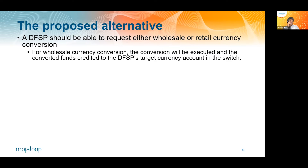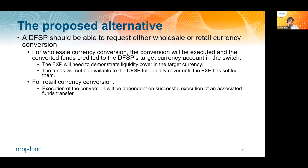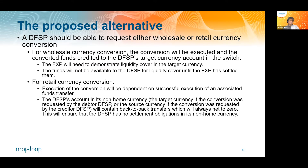We wanted a DFSP to be able to request either wholesale or retail currency conversion in the same way, so it shouldn't be necessary for the foreign exchange provider to know whether it's wholesale or retail conversion that's being required. For wholesale currency conversion, the conversion just gets executed and the converted funds are credited back to the DFSP's target currency account. For retail, i.e. per transfer, what we want is that the execution of the conversion will be dependent on a successful execution of an associated funds transfer. If the transfer fails, the conversion should fail. If the conversion fails, the transfer should fail. It should not be possible for either to succeed without the other succeeding.